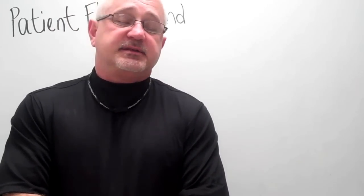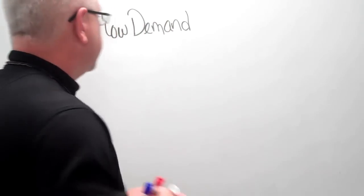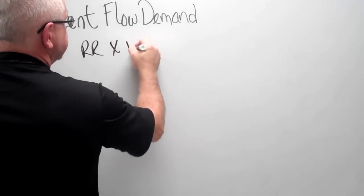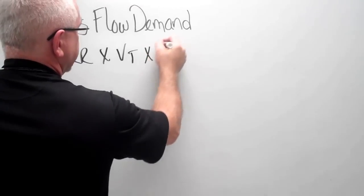Our next formula we're going to be looking at is our patient inspiratory flow demand. It's a very simple formula in which we look at the respiratory rate times the patient's tidal volume times 6.